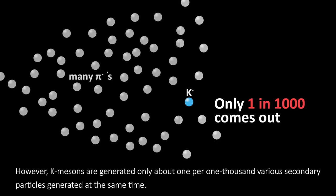However, K-mesons are generated only about 1 per 1,000 various secondary particles generated at the same time.